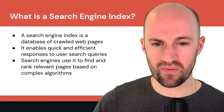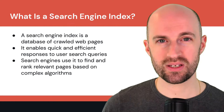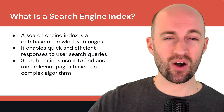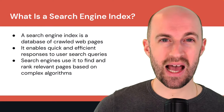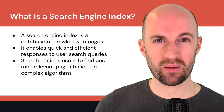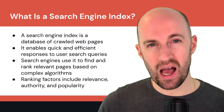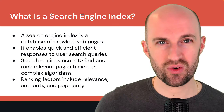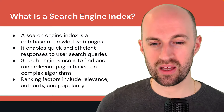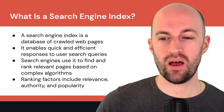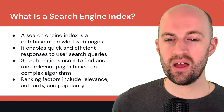Search engines use the index to find and rank relevant pages based on complex algorithms that are becoming more advanced through machine learning and artificial intelligence — enhancing themselves as they learn from more information. Ranking factors include relevance, authority, and popularity. There are hundreds or even thousands of ranking factors, but these are the main ones: how relevant the site is to the query, how authoritative and trustworthy it is, and how popular it is.